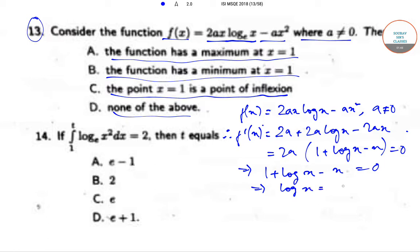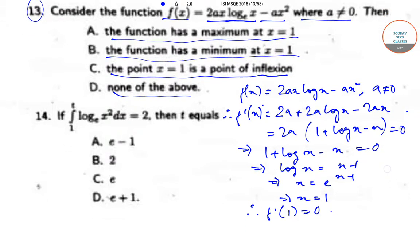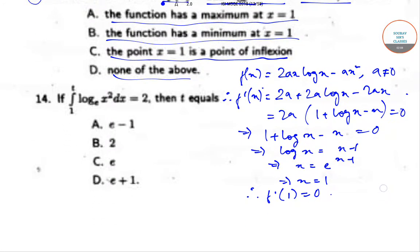Setting f'(x) = 0 implies log(x) = x − 1, which implies x = e^(x−1). This gives us x = 1. Therefore f'(1) = 0, which is what we've got. Now to determine whether the function has a maximum or minimum, we need to find f''(x).